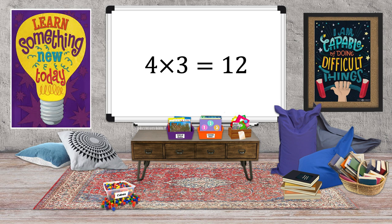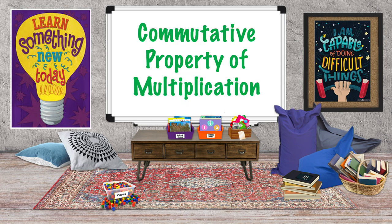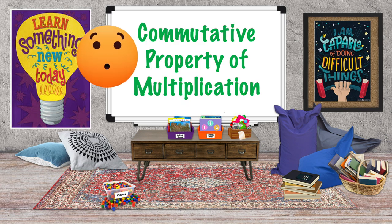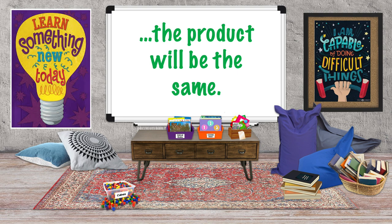We've just discovered an important property of multiplication — it's called the commutative property of multiplication! The commutative property of multiplication tells us that no matter the order of the factors, the product will be the same. Three times four equals twelve, and four times three equals twelve.